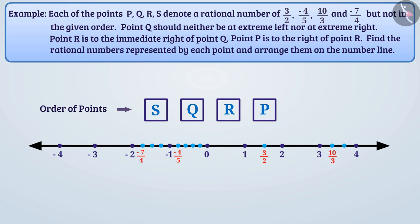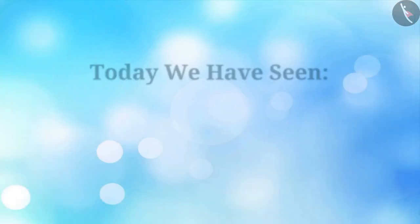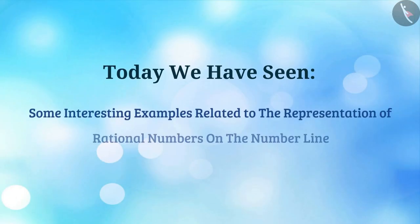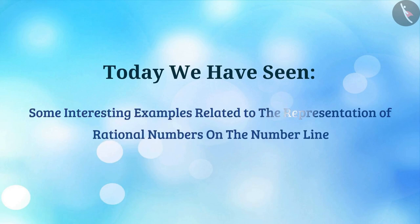Considering the order of rational numbers and the order of the given points, we can now say that point S is minus 7 by 4, point Q is minus 4 by 5, point R is 3 by 2, and point P represents 10 by 3. So today we have seen some interesting examples related to representation of rational numbers on the number line.